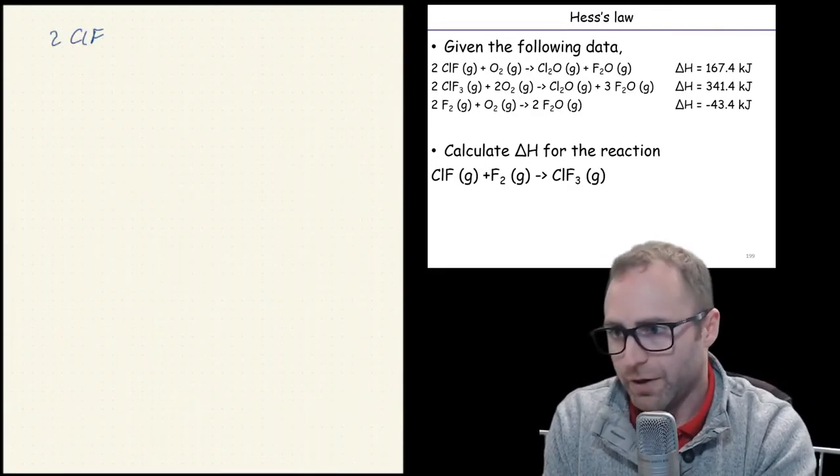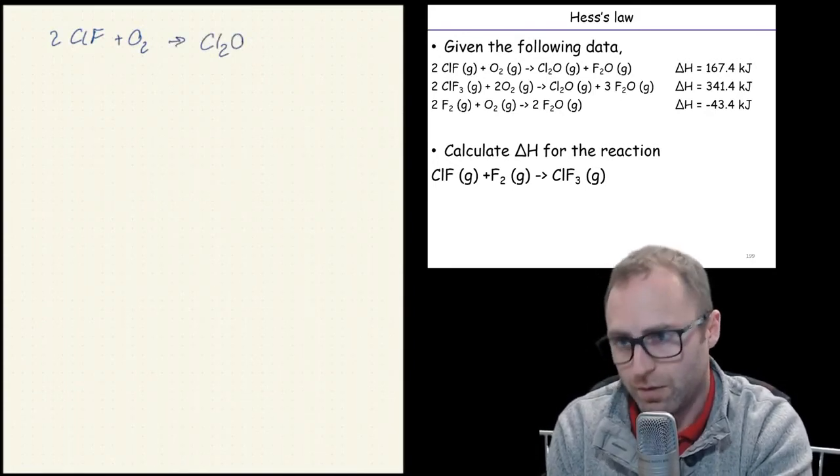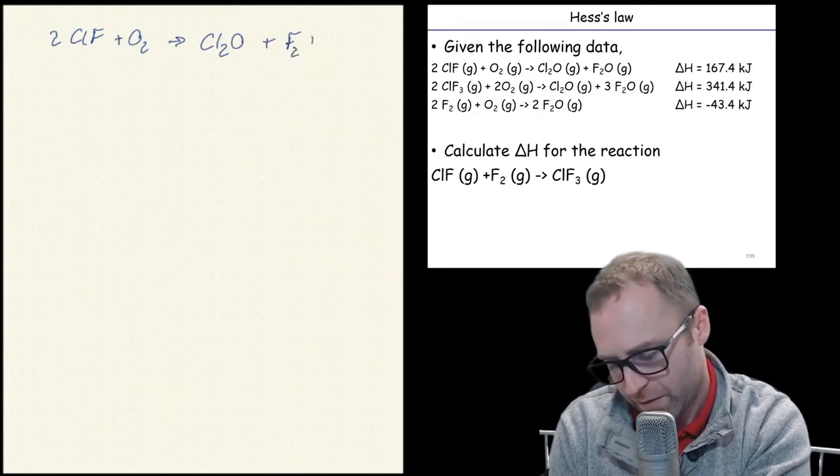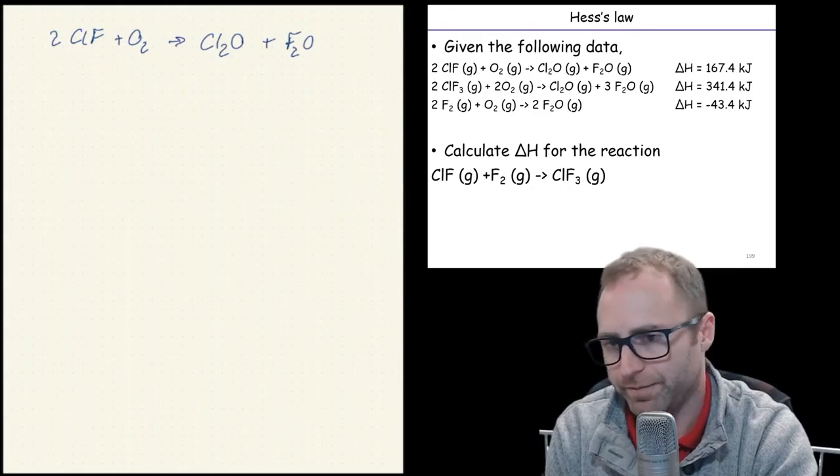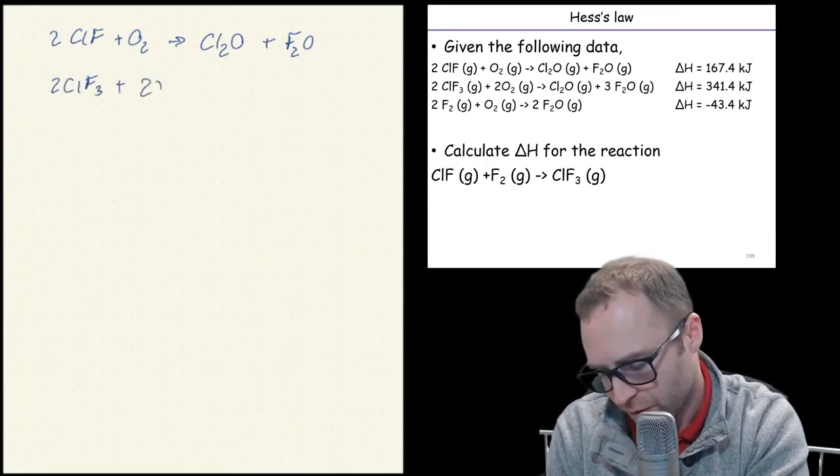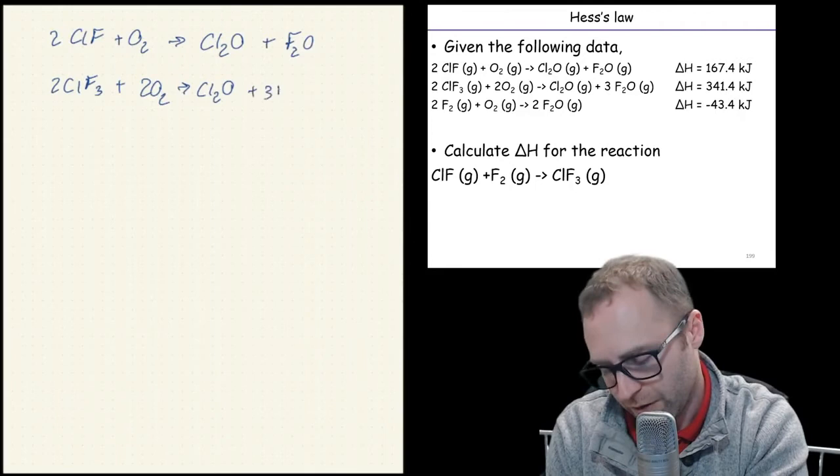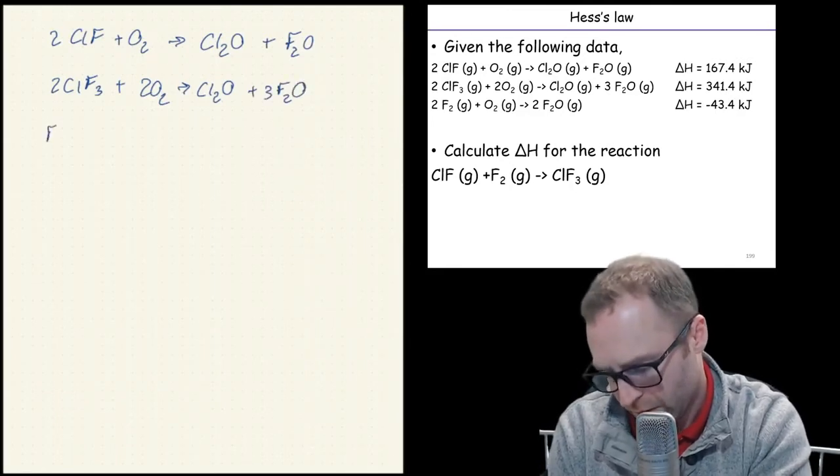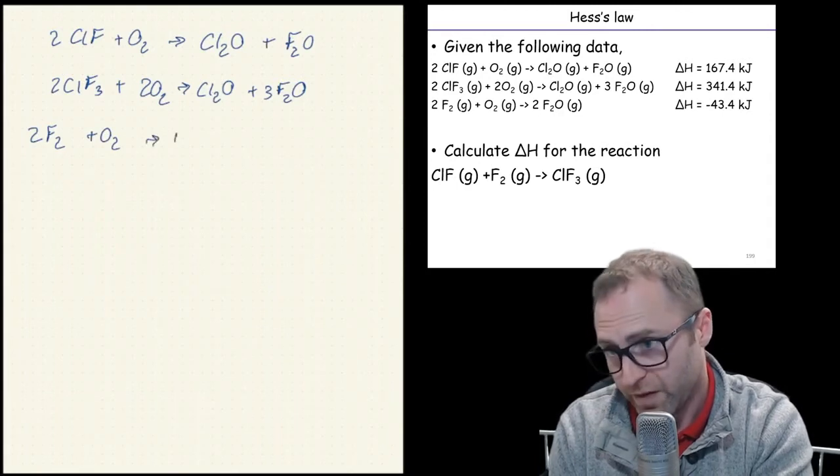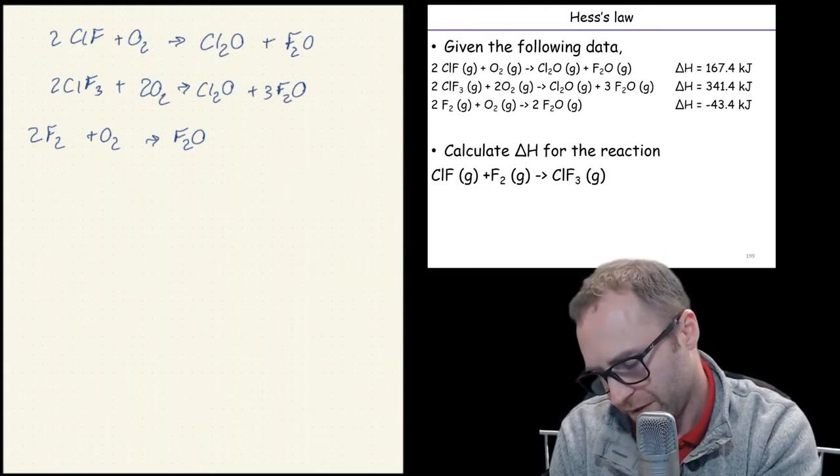So we've got our top equation then going to form our wonderful species. For simplicity's sake, I'm not going to write out those enthalpies of formation. And then 2 ClF3 plus 2 O2 going to form Cl2O plus 3 F2O. And then 2 F2 plus O2 going to form 2 F2O. Great. Oops, I forgot a 2.